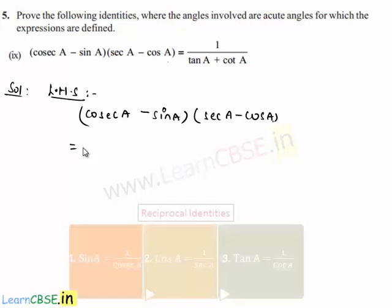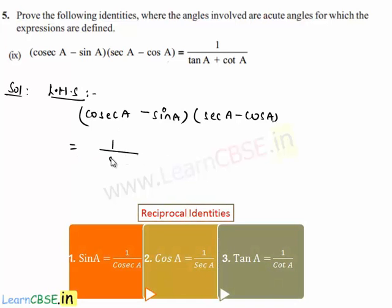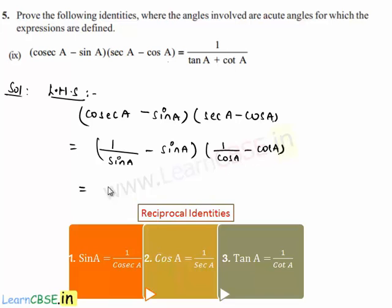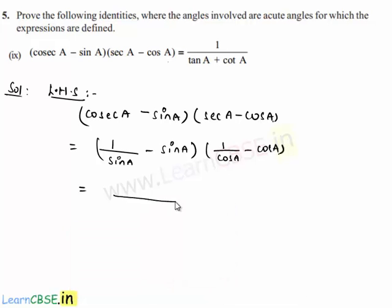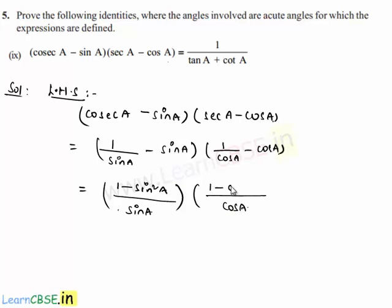Which is equal to — cosecant a can be written as 1 by sin a, and secant a can be written as 1 by cos a minus cos a. Let us take LCM as sin a, then it becomes 1 minus sin squared a in the numerator. And if we take cos a as the common denominator in the second term, then it becomes 1 minus cos squared a in the numerator.